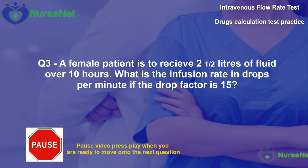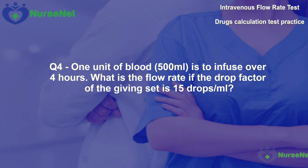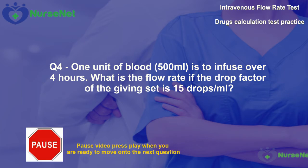Question 4. One unit of blood — 500 millilitres — is to infuse over 4 hours. What is the flow rate if the drop factor of the giving set is 15 drops per millilitre?